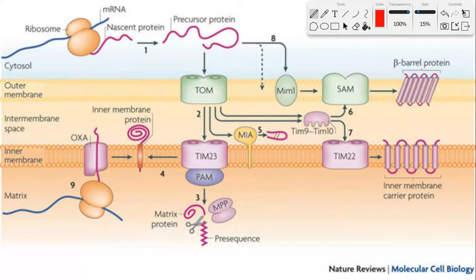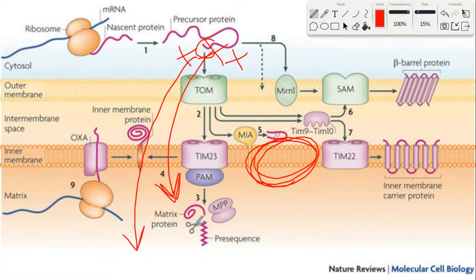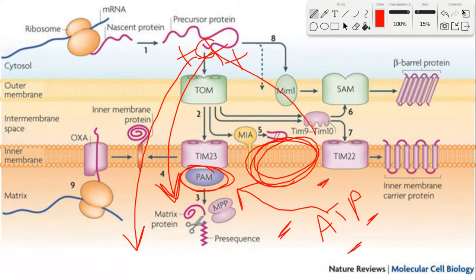Depolarization-induced translocation stalling occurs because when the membrane potential is lost, there's no electrophoretic transfer — there's no pulling force. The positive charges on the protein aren't going to be pulled into the negatively charged matrix because it's been depolarized. Additionally, the PAM complex in the matrix contains an HSP-70 subunit which uses ATP to pull proteins through the translocon, and ATP generation is also lost following depolarization. So in a sick mitochondrion, protein import stalls because of the loss of electrophoretic transfer and the loss of ATP.